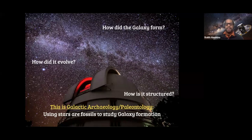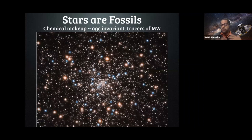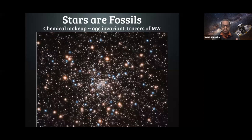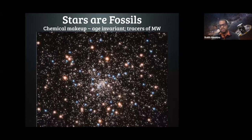The reason why we use stars as fossils is because the chemical makeup of stars is largely age-invariant. If you look at a star that's 10 gigayears old, its chemical abundances are largely preserved. This is not true for every element — things like carbon, nitrogen, and oxygen change over the course of a star's lifetime due to dredge-up processes. But most chemical elements on the periodic table generally don't change, so you can use the chemical makeup of a star to study how the Milky Way has evolved chemically over its tens of gigayears of history.